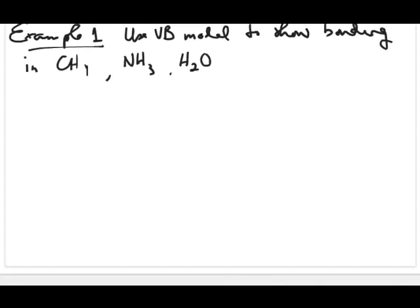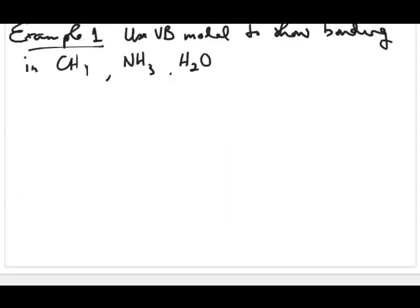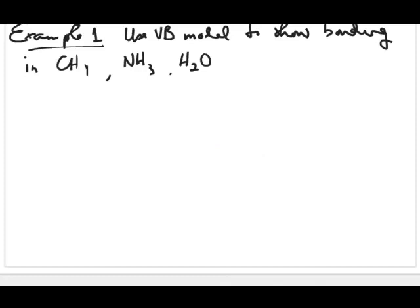The first question we'll work through requires using the valence bond model to show bonding in CH4, NH3, and H2O. This means determining the orbital types used by each atom, drawing a sketch of the orbitals and their overlaps, and identifying the bond types (sigma or pi). We start with the Lewis structures — these three molecules should be straightforward to draw by now.